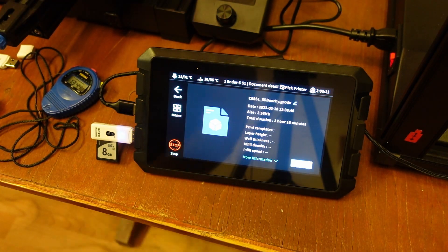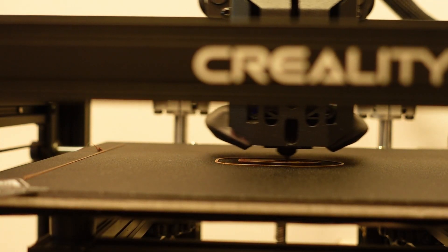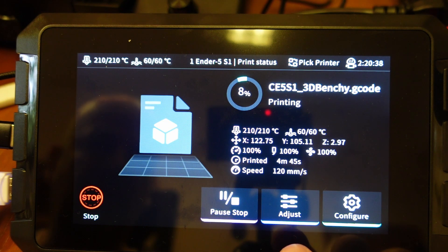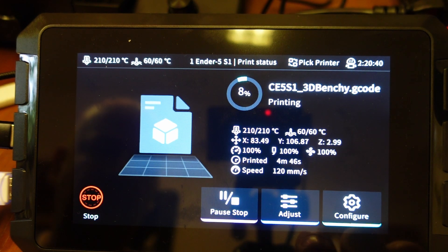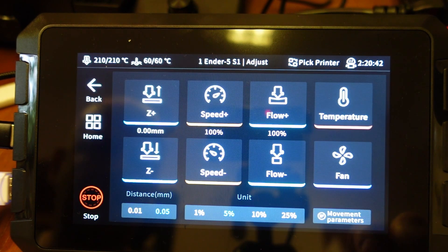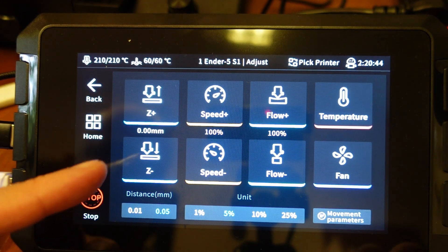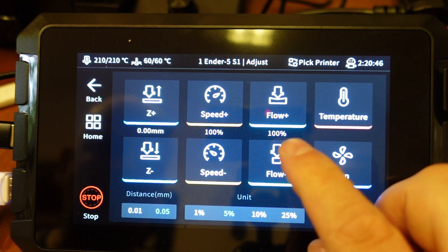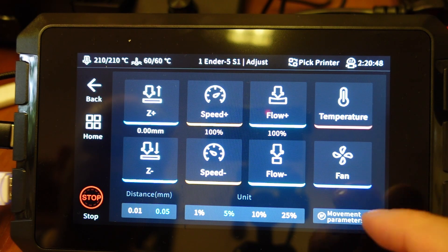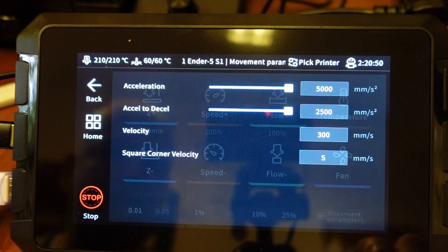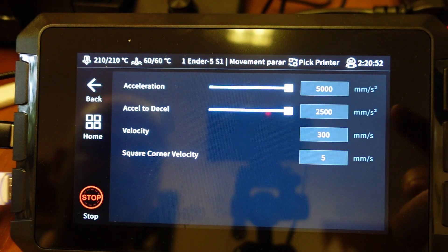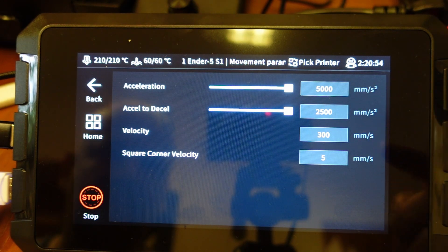Now reprinting the Benchy using the same G-code. This is another big advantage of Klipper: we have a lot of possibilities to adjust the printing. Setting the Z offset, the speed, flow rate, temperature, fan speeds. Even the moving parameters we can change here, the acceleration and the velocity.